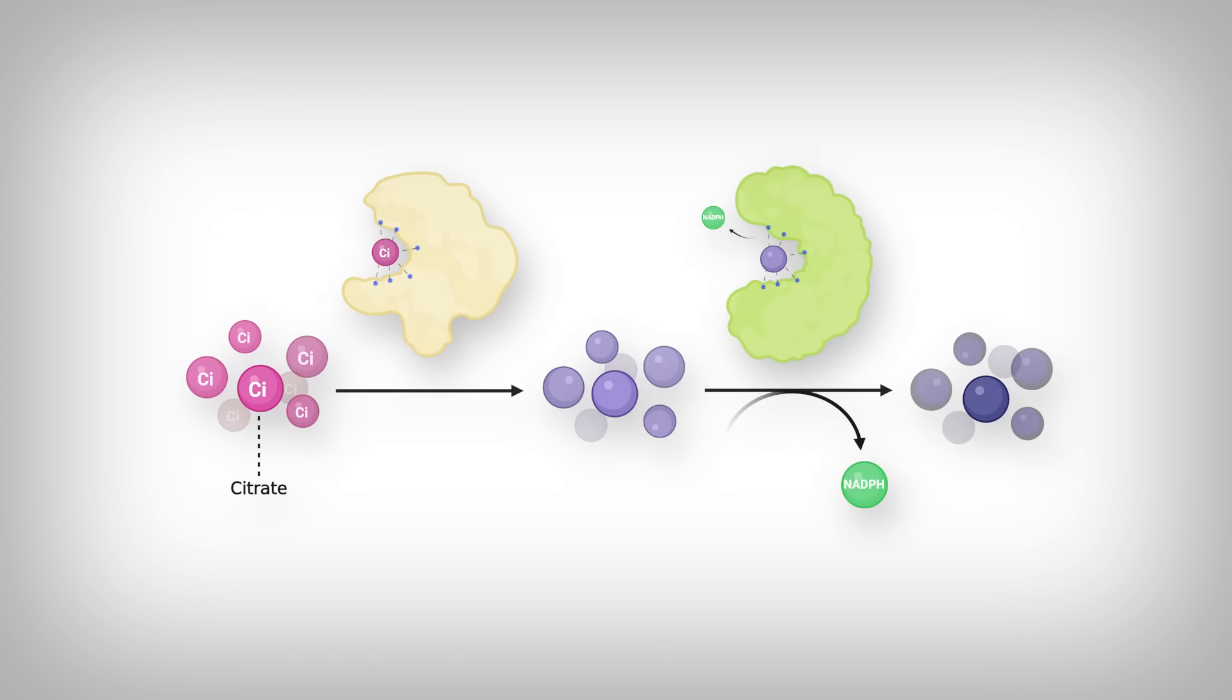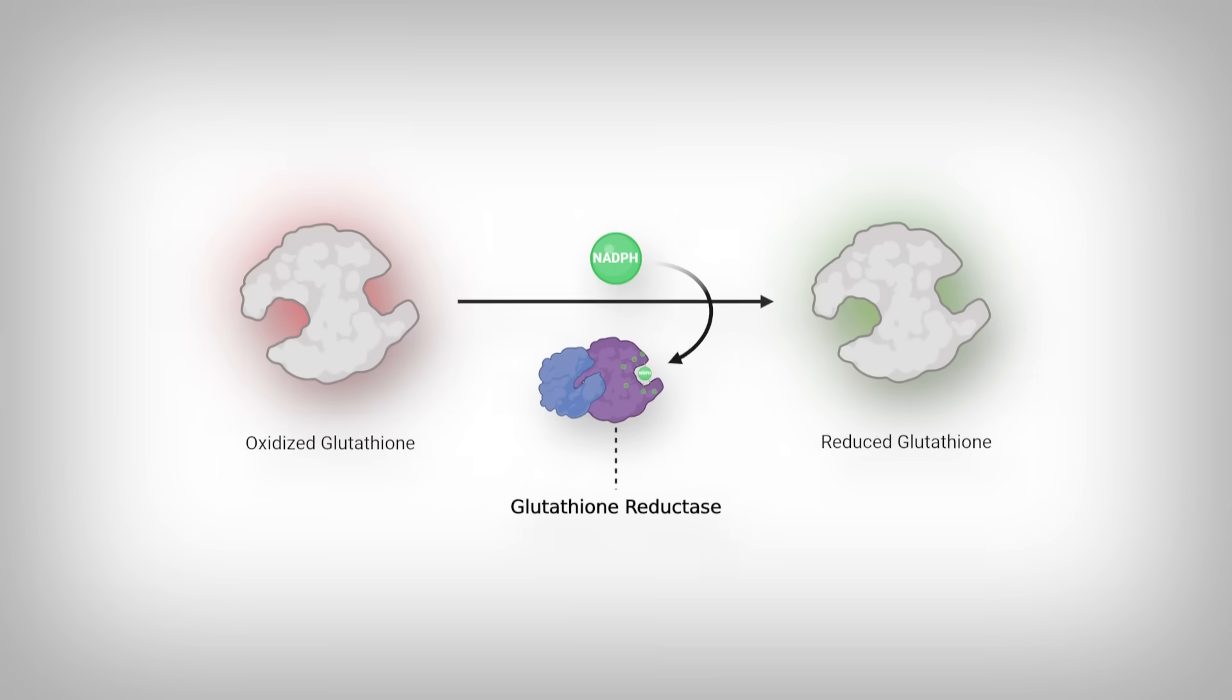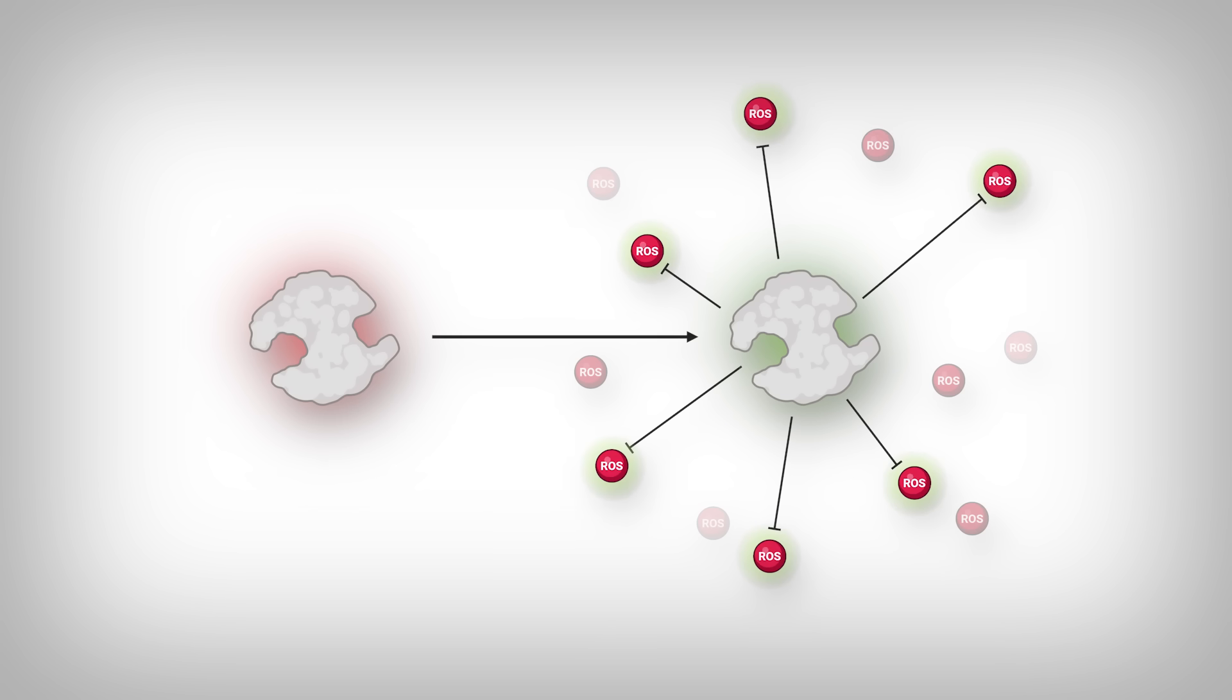So citrate plays a role by being eventually converted to isocitrate, which can then be used indirectly to generate more NADPH. NADPH is an extremely important molecule in that it allows your cells' internal antioxidant systems, so systems that neutralize reactive oxygen species, to function. Essentially, it gets used by a protein called glutathione reductase, which recharges a potent cellular antioxidant called glutathione, which then interacts with and neutralizes the aforementioned reactive oxygen species. So, without citrate, way at the beginning, you could have less recharging potential for glutathione, meaning that the cells are subject to greater concentrations of these damaging reactive oxygen species.